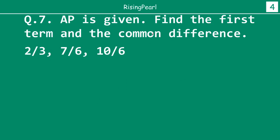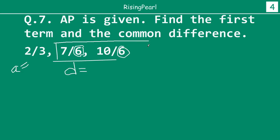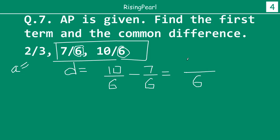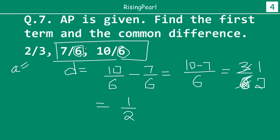Let's take one more question. Our first term A is equal to 2 by 3, and for the common difference D, I am noticing that the denominator is 6 here and 6 here, so it will be a little bit easier if we take those two terms to find the common difference. It will be 10 by 6, which is the third term, minus 7 by 6, which is the second term. So 6 is the denominator, and 10 minus 7 equals 3, giving us 3 by 6, which simplifies to 1 by 2. So in this arithmetic progression, our common difference is 1 by 2.